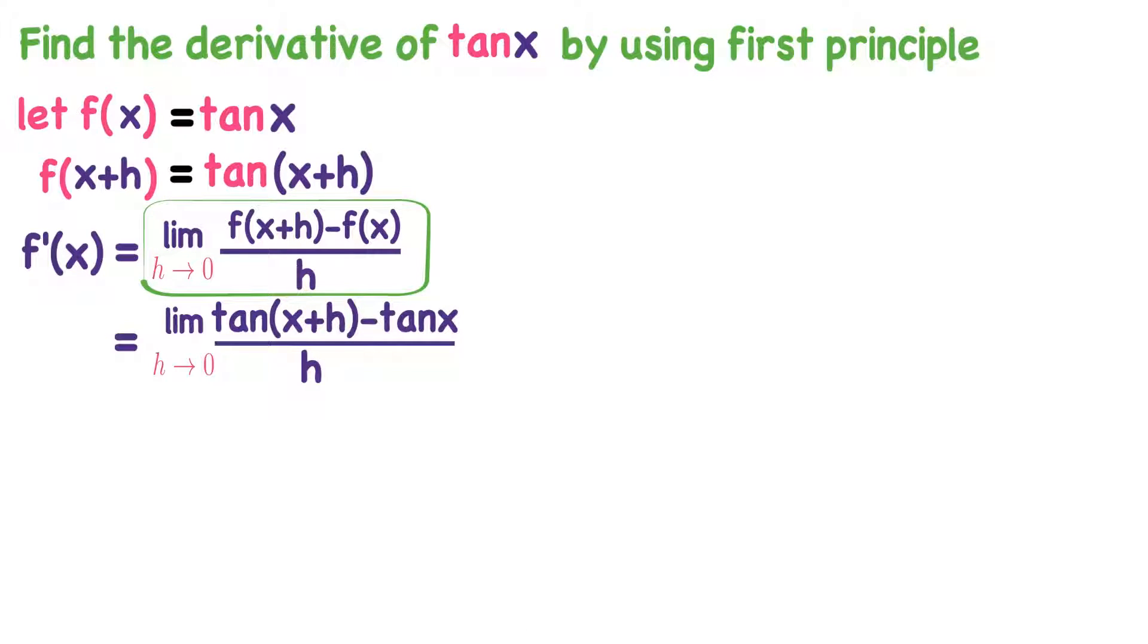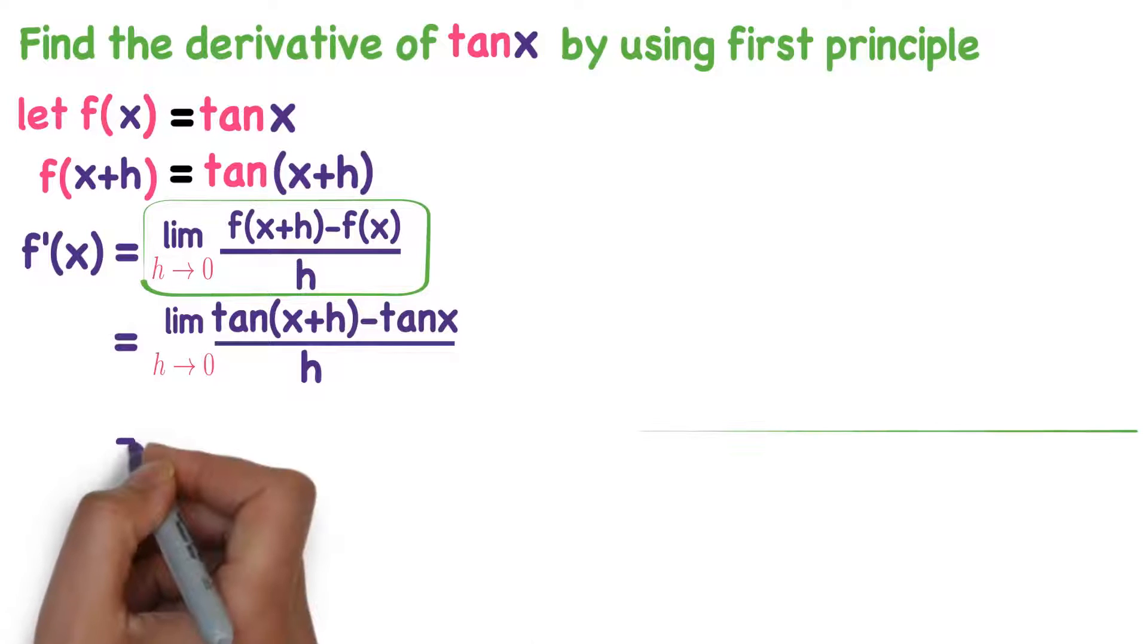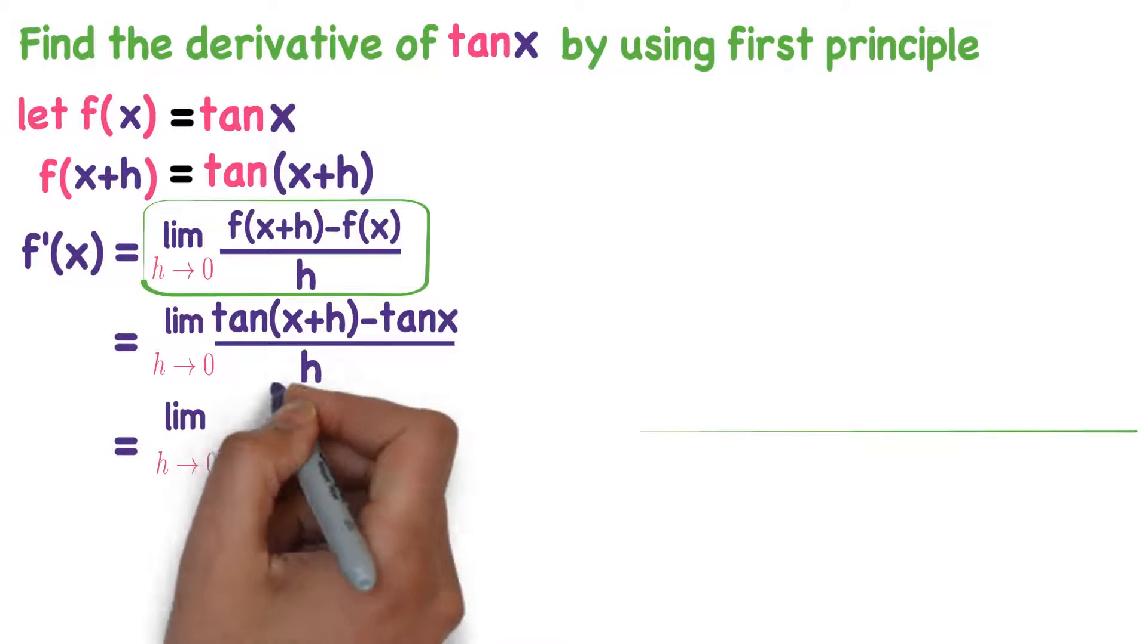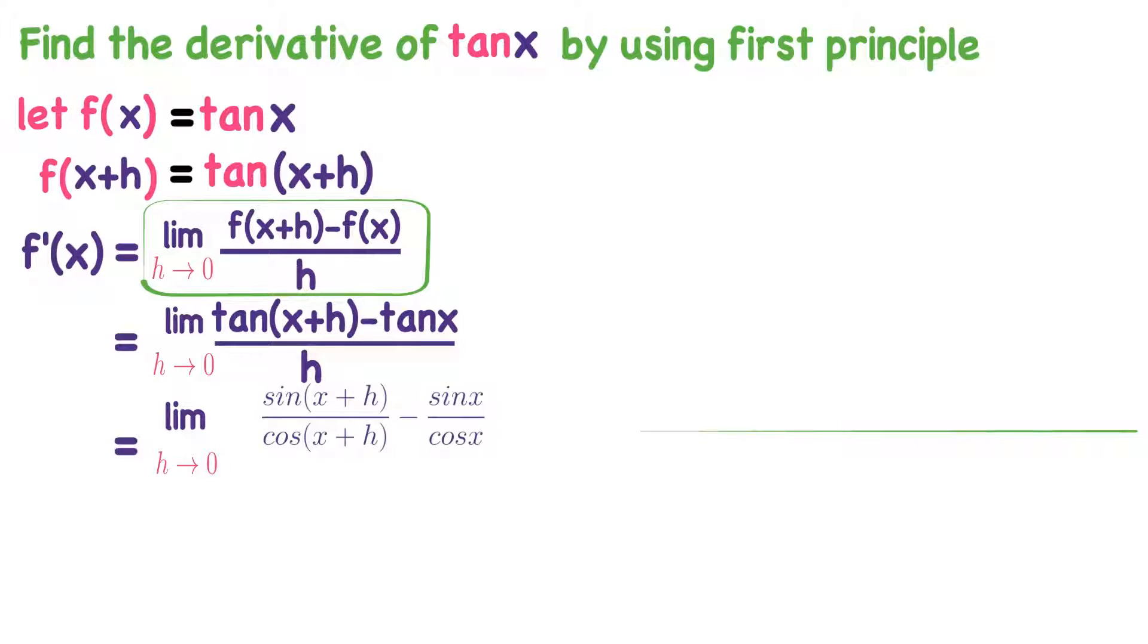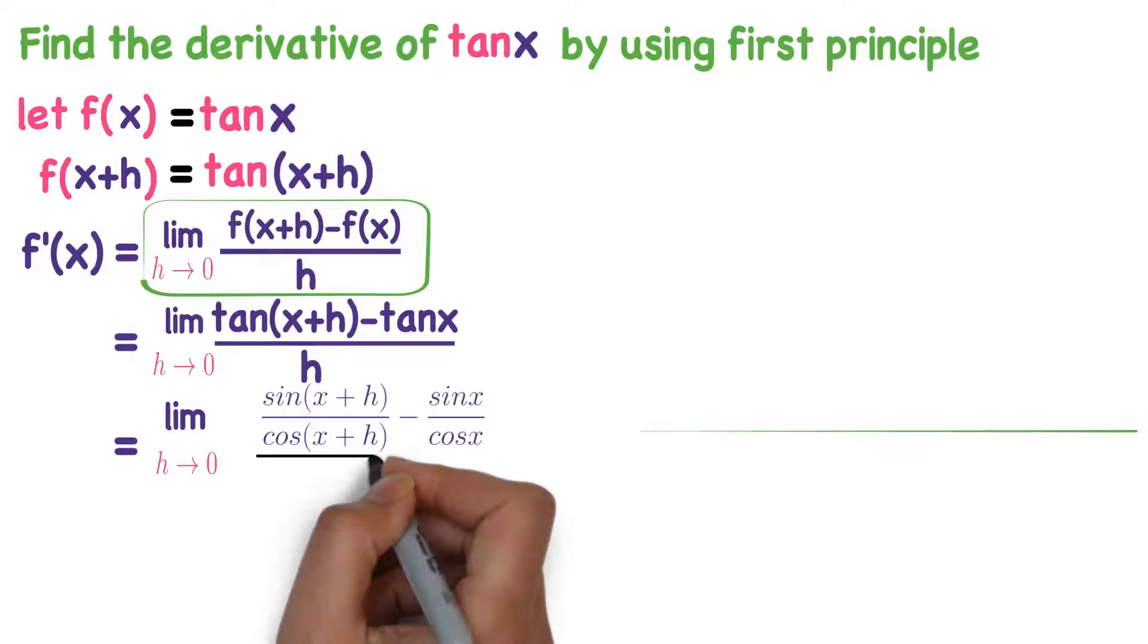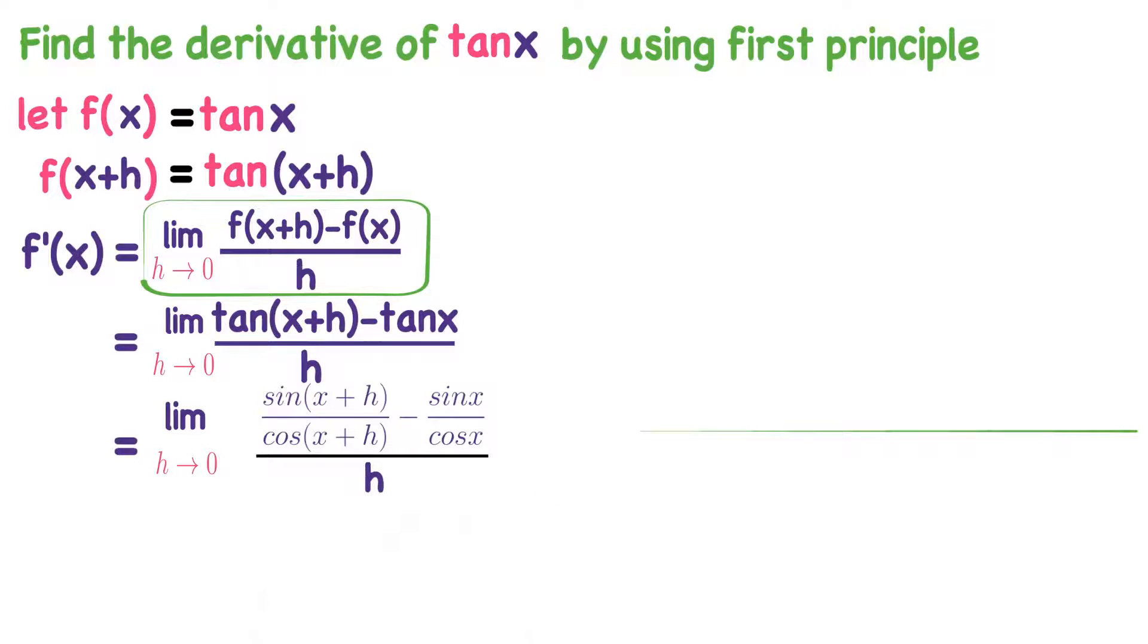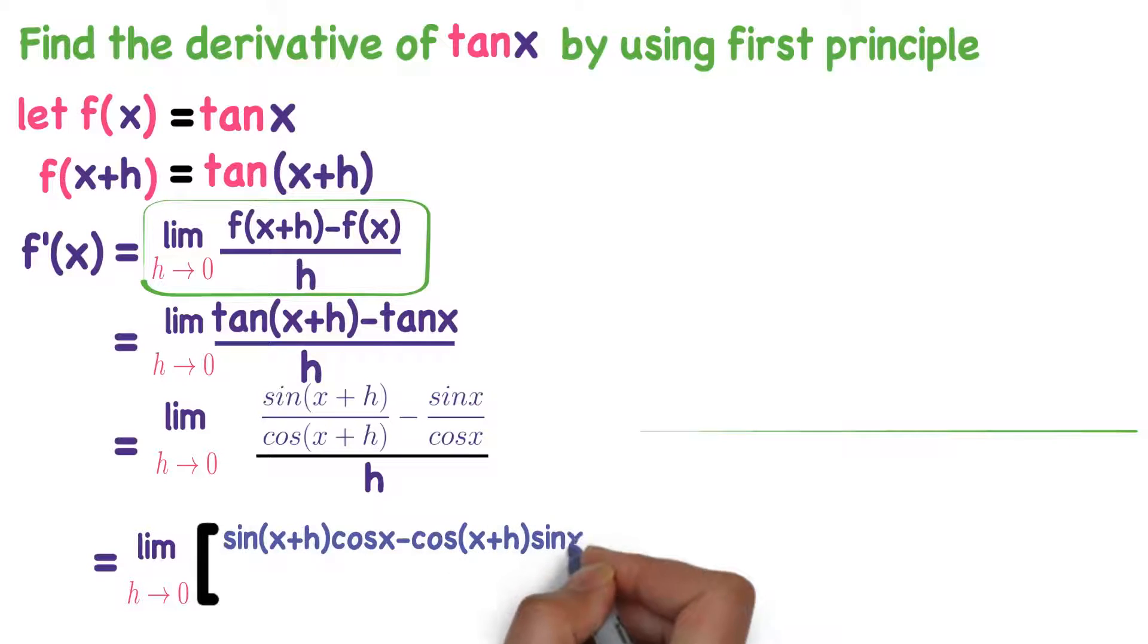We know that tan x is sin x divided by cos x. So limit h tends to 0, tan(x+h) you write it as sin(x+h) divided by cos(x+h) minus sin x divided by cos x. Now you observe that above expression. If I take the LCM as cos(x+h) into cos x, then numerator will be sin(x+h) into cos x minus cos(x+h) into sin x, that whole divided by h is written as into 1 by h.